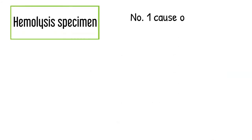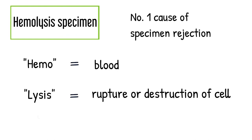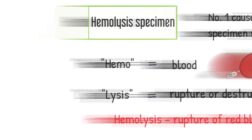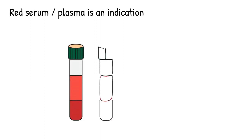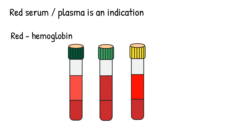Hemolyzed specimen. Hemolyzed specimen is the number one cause of specimen rejection. 'Hemo' means blood, and 'lysis' means rupture or destruction of cells. When combined, hemolyzed means rupture of red blood cells. Red serum or plasma is an indication of hemolysis. The more red the serum or plasma is, the more red blood cell rupture there is. The red color comes from hemoglobin that is in red blood cells, which gets released into the serum or plasma when the cells rupture.